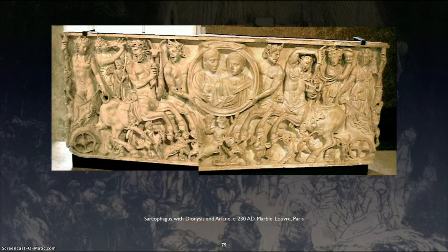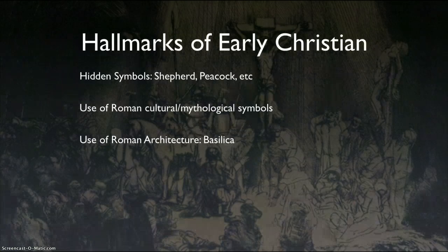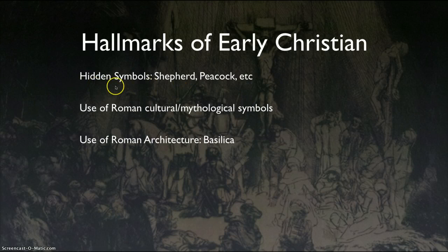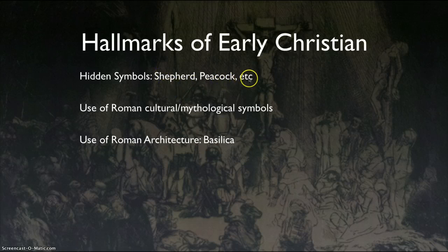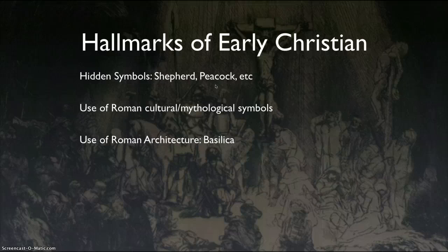As we go into the Christian era, we need to talk about the catacombs. But first, let's talk about the general hallmarks of the early Christian art era — really three things to see here. The first is hidden symbols. Because Christianity was still illegal within the empire, Christians would actually use hidden symbols: shepherds, peacocks, doves with an olive branch in their beak, and the fish or ichthus. These symbols were taken from Roman culture, and Christians would take them and change their meaning as a secret code.